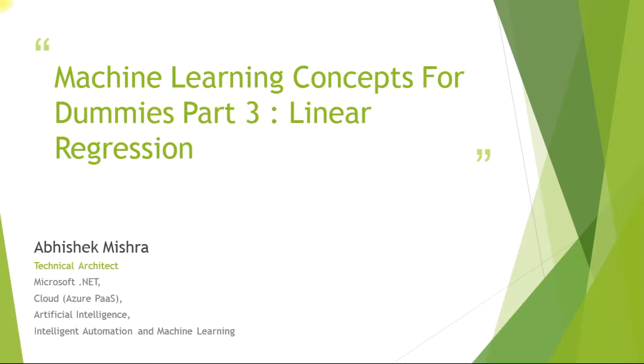Today we will see the third part of the series Machine Learning Concepts for Dummies, where we will see what linear regression is. In our earlier sections we saw what machine learning is, how machine learning is done, and elementary concepts like supervised learning, unsupervised learning, reinforcement learning. We saw clustering problems, classification problems, and regression problems. Today we will see linear regression in detail.